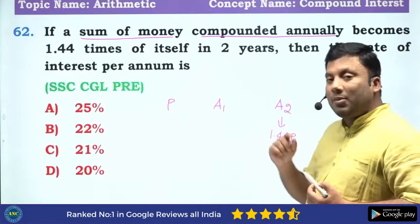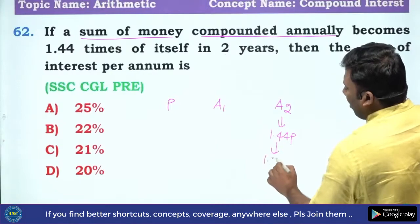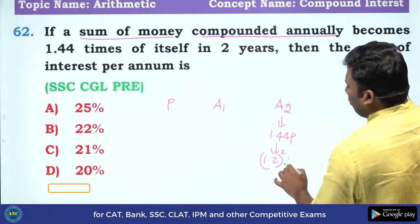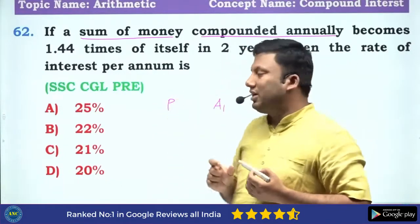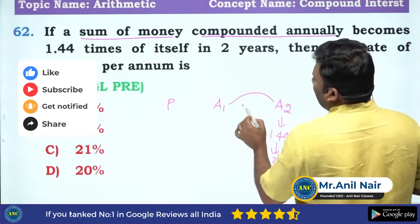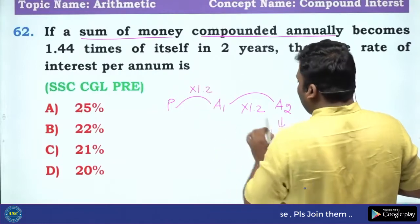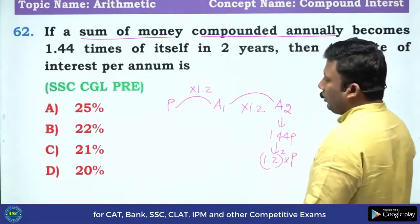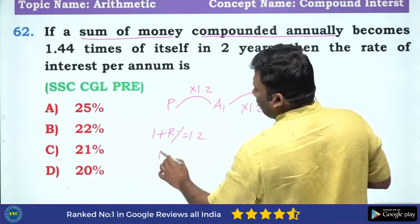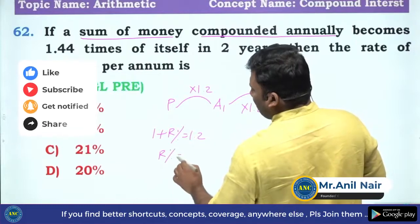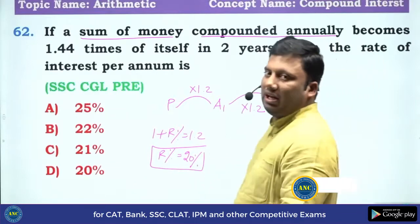So A2 has become P into X squared. X squared is 1.44, which is 1.2 whole squared into P. The scaling factor between consecutive years is always the same, so this scaling factor is 1.2 each year. That is the reason we get 1.44. So the scaling factor X is 1 plus R percentage = 1.2, meaning R percentage is 0.2, which is 20%. The rate of interest every year is 20%.